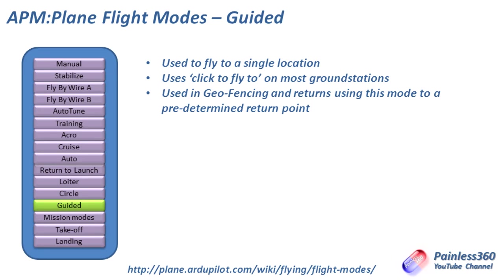Guided mode is quite nice — it tends to be used from a ground station rather than selected as a discrete mode from a list. Most ground stations have a click-to-fly feature where you right-click on the map and say fly to here, and if you have a connection to the plane via APM radios, the plane is put into guided mode and flies to that point. It's also what's used in geofencing — if you set a boundary in Mission Planner and the plane goes outside it, guided is the mode APM uses to get back inside.